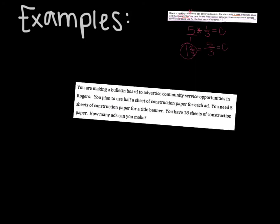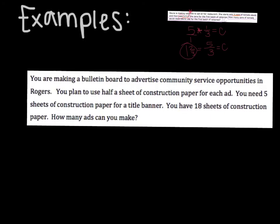Second example. Step number one — read and box the question and put a variable. You are making a bulletin board to advertise community service opportunities in Rogers. You plan to use half of a sheet of construction paper for each ad. You need five sheets of construction paper for a title banner. You have 18 sheets of construction paper. How many ads can you make? There's my question. I'm boxing it, and since we're talking about how many ads, I'm going to pick the letter A.